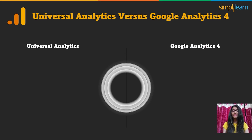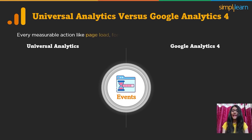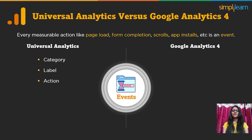Let's see the detailed comparison of every aspect. First, we look at events. In analytics, every measurable action — for example, page load, form completion, scrolls, app installs, etc. — is measured as an event. An event has a category, label, and action in Universal Analytics, and it has its own hit type. In Google Analytics 4, there is no such categorization; all hit types from Universal Analytics are considered as events.